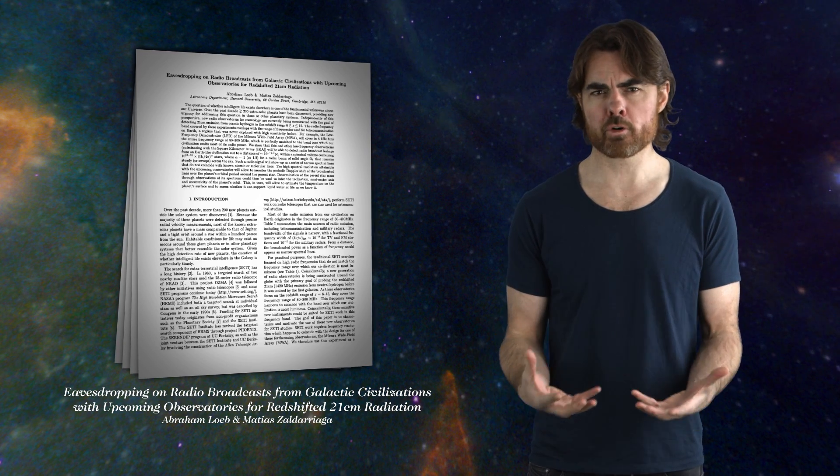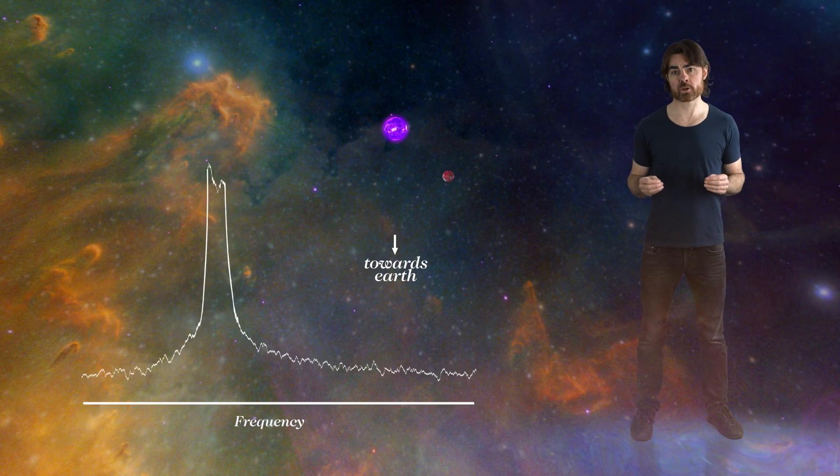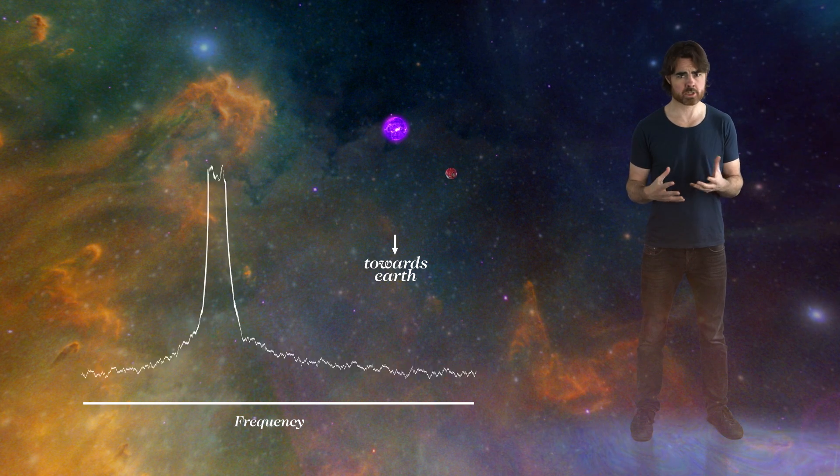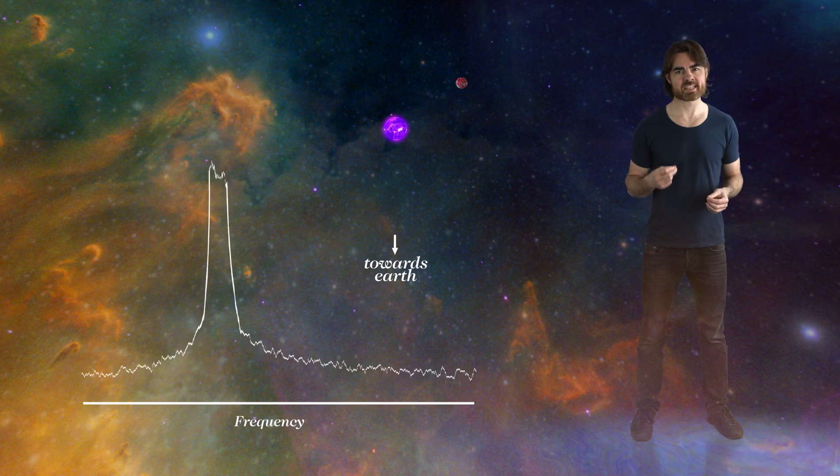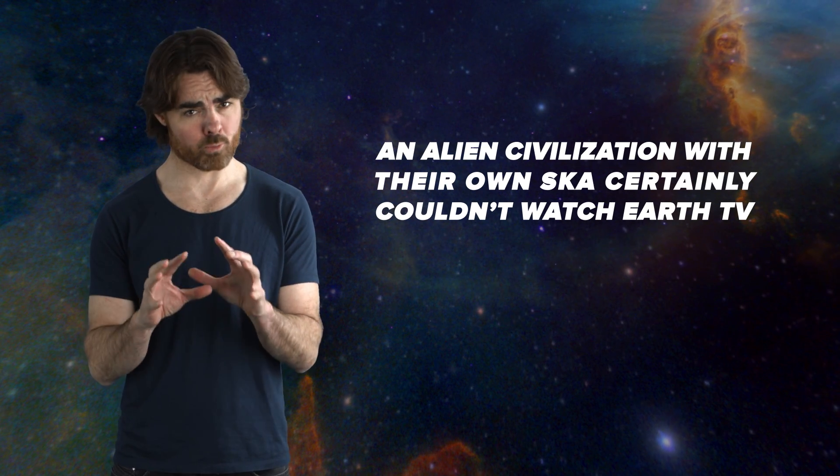Such a machine also just happens to be perfect for spotting alien television bubbles. According to the calculations of Harvard University's Avi Loeb and Matthias Zaldarriaga, the SKA should be sensitive enough to spot our own TV bubble from 100 or more light years away. So will we soon be picking up extraterrestrial sitcoms? Not quite. Loeb and Zaldarriaga's numbers assume pointing SKA at a target star system for an entire month and adding up all of the radio emission over that time. For an artificial radio source, that would look like an emission over a narrow frequency range that doesn't correspond to any natural process. These emission spikes may also shift back and forth in frequency due to Doppler shift as the distant technologically advanced planet orbits its star. So that's enough to identify a technological source, but not to actually decode the signal. An alien civilization with their own SKA certainly couldn't watch Earth TV.